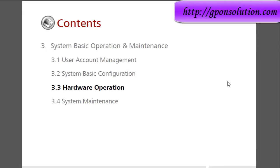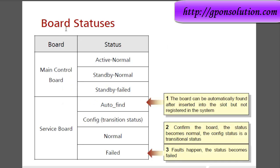Hi everybody, I am Shailesh. Today I will discuss some hardware operations of Huawei OLT. Here, board status: main control board status includes active normal, standby normal, standby failed. Service board status includes auto-find, config normal, and failed. This is normal operation. Standby is normal; standby failed occurs when any fault occurs on the control board.